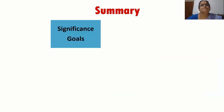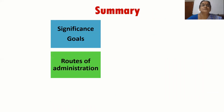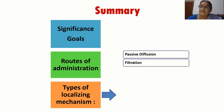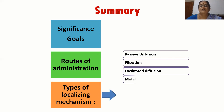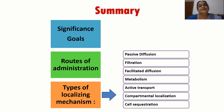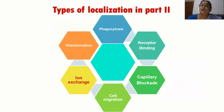In summary, we have seen the significance and goals of diagnostic and therapeutic radiopharmaceuticals, different routes of administration, and the localization mechanisms: passive diffusion, filtration, facilitated diffusion, metabolism, active transport, compartmental localization, and cell sequestration. In part two, we will cover phagocytosis, receptor binding, capillary blockade, cell migration, ion exchange, and chemisorption.